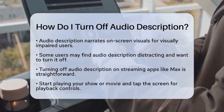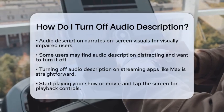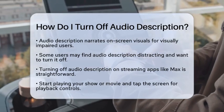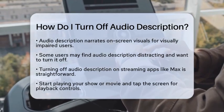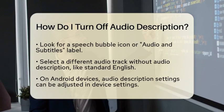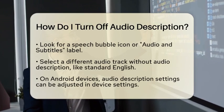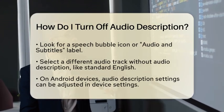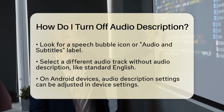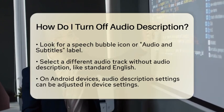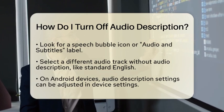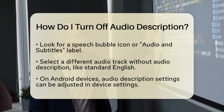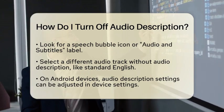For streaming applications like Max, which was formerly known as HBO Max, turning off Audio Description is quite simple. First, start playing your desired show or movie. Once playback begins, tap the screen to bring up the playback controls. Look for an icon that resembles a speech bubble or is labeled Audio and Subtitles. Tap on this icon to open the Audio menu. From there, you can select a different audio track that does not include audio description, such as the standard English audio track.